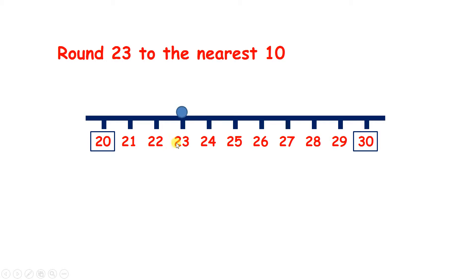So 23 rounded to the nearest 10 is 20, and we can say that we've rounded down.